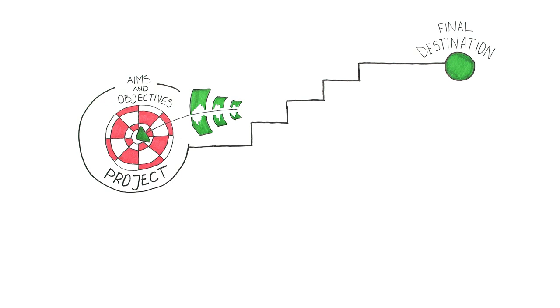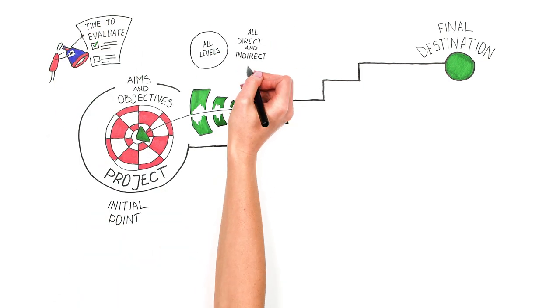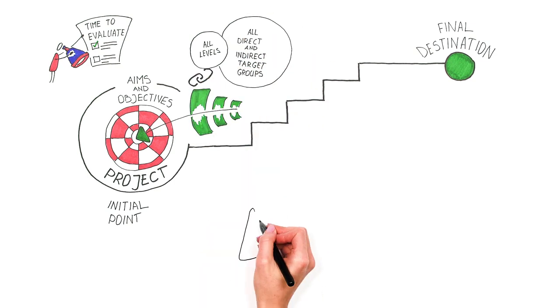The aim and objectives are set in the initial preparation of the project and monitored and evaluated during the whole process. The aim and objectives must be related to all levels and all direct and indirect target groups of the project. Setting the aim and objectives helps assessors to understand what the project is really about.